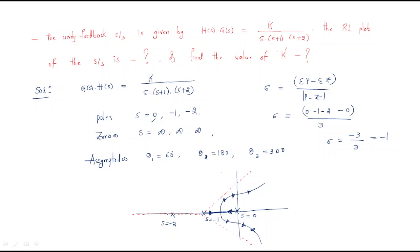The root locus path goes from the poles toward infinity along the asymptotes. The pole at s = 0 follows one asymptote direction, the pole at s = −1 follows another, and the pole at s = −2 follows the third direction. The two poles between 0 and −1 break away and travel to infinity along the 60° and 300° asymptotes, while the pole at −2 goes to infinity along the 180° asymptote.